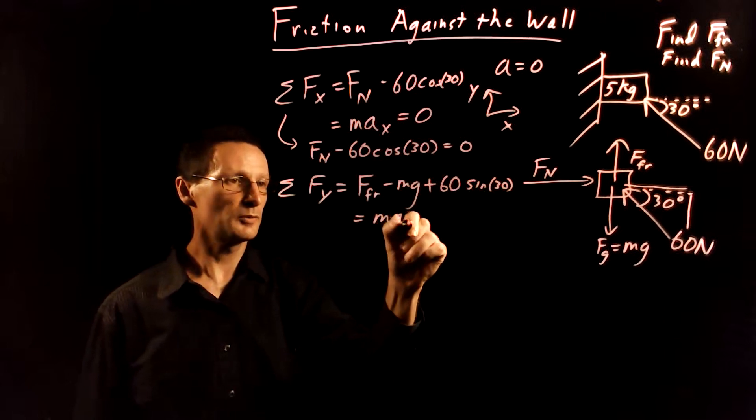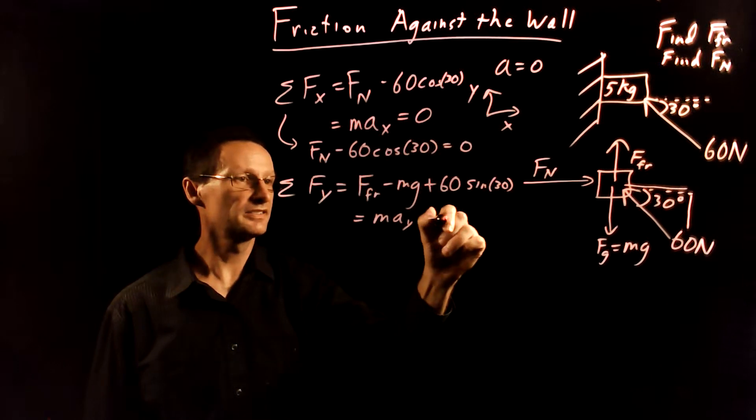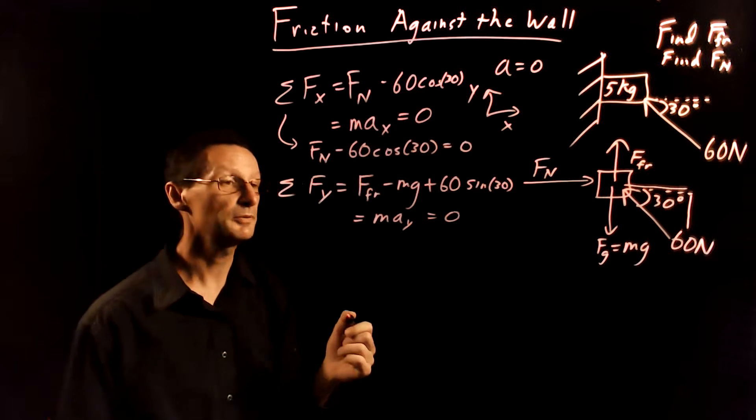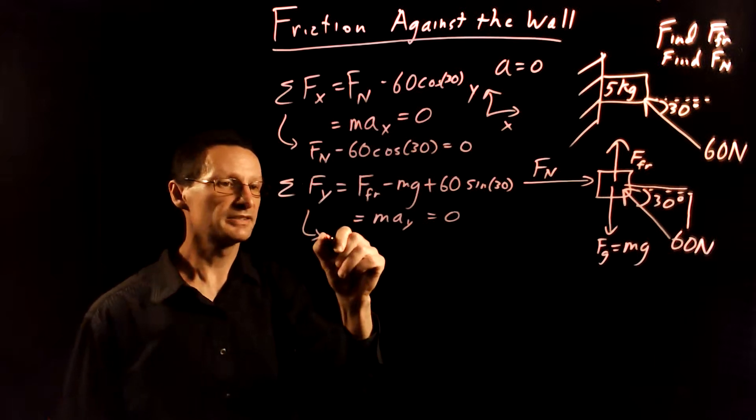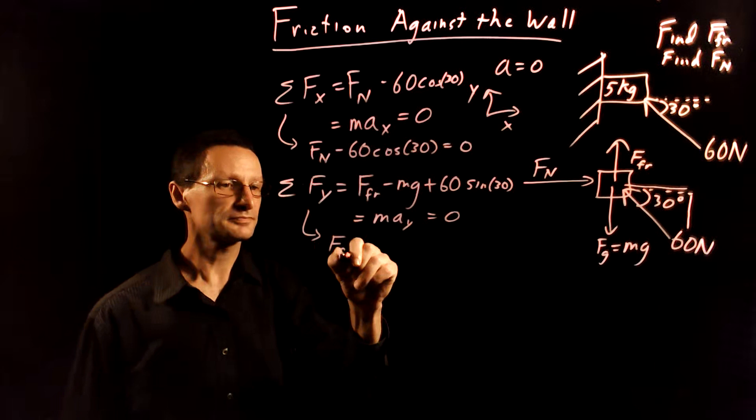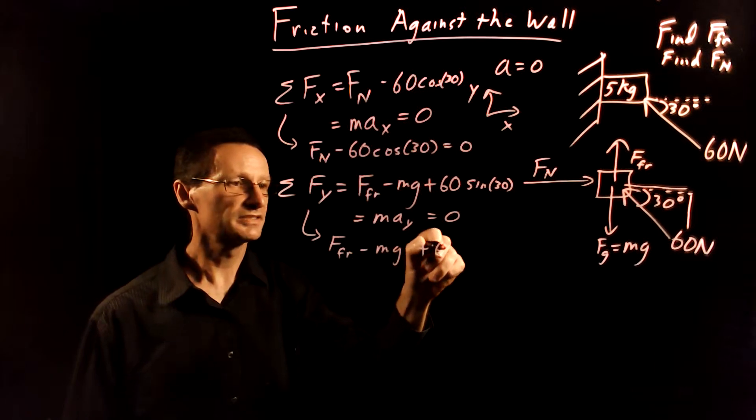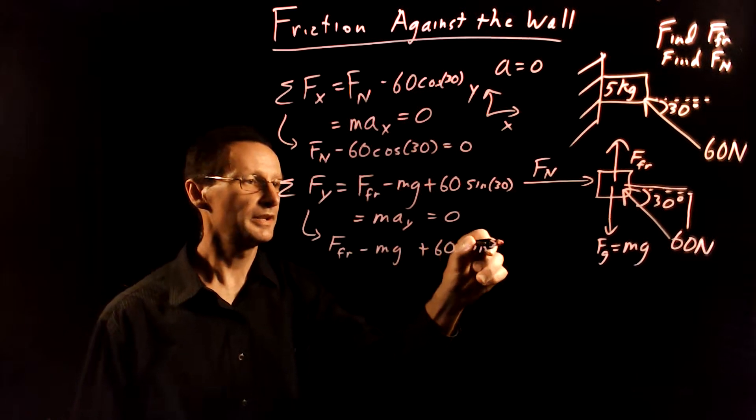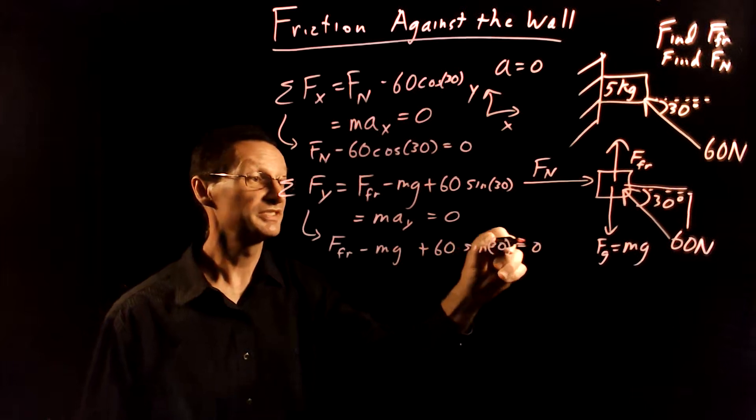I set that equal to ma in the y direction but again a is zero. All components of a are zero and so this tells me that the force of friction minus mg plus 60 sine 30 is going to be equal to zero.